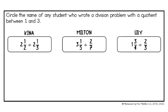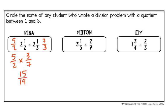Circle the name of any student who wrote a division problem with a quotient between 1 and 3. Kina has 2 and 1 half divided by 2 and 1 third. Changing to improper fractions gives 5 halves divided by 7 thirds. I keep the first, change the symbol, and flip the second. 5 times 3 is 15, and 2 times 7 is 14. 14 goes into 15 once with 1 left over, so the answer is 1 and 1 fourteenth — which does fall between 1 and 3.